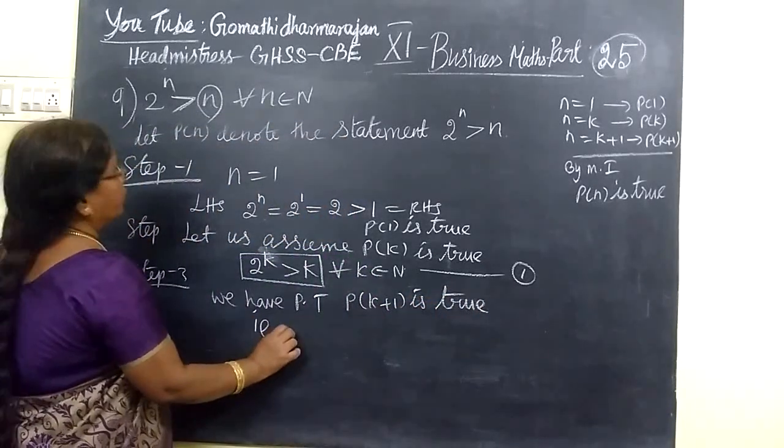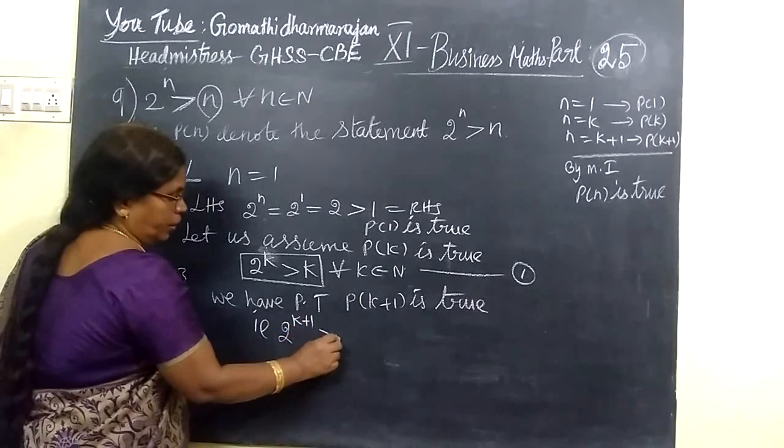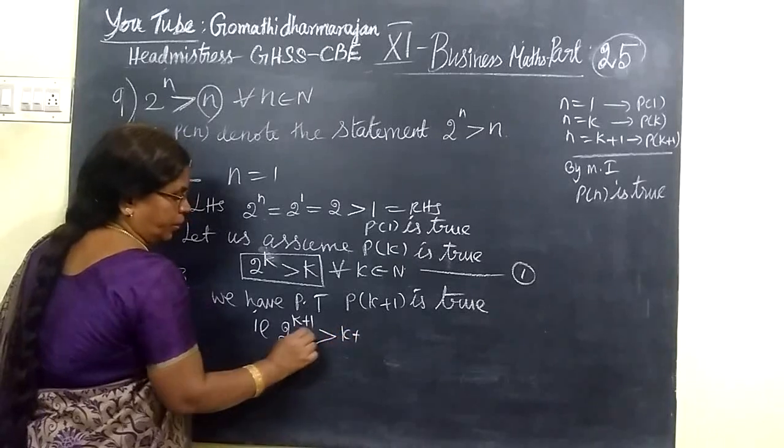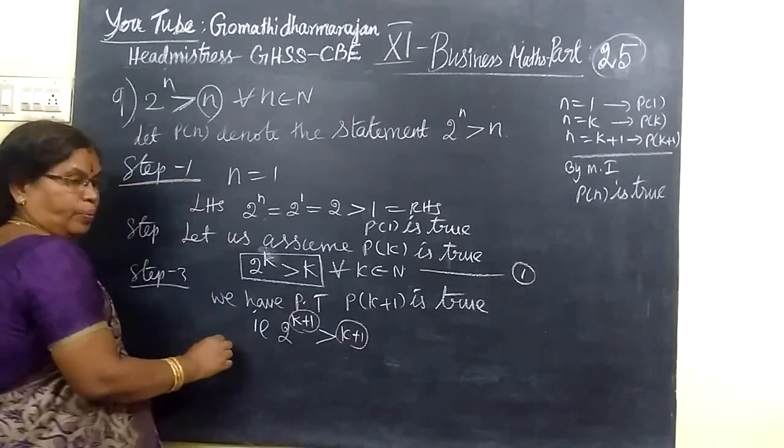Then step 3. Now step 3 is the number. Prove 2 power n, the finger left is the number K plus 1 greater than K plus 1. In this K plus 1 is the number.